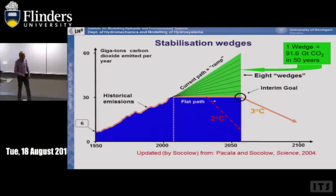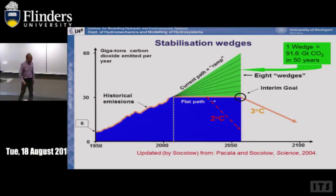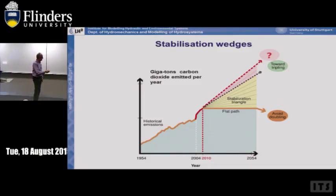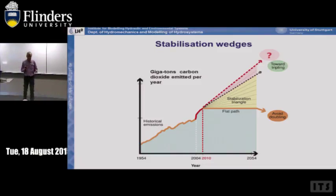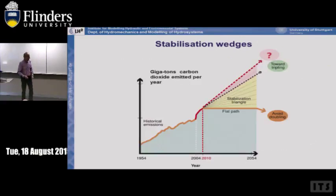Has the slope of CO2 emissions increased or decreased after 2004? Of course it increased. In 2010 the number reached approximately 38 to 39 gigatons of CO2 emitted per year. That means we had a real increase over the last 10 to 12 years.